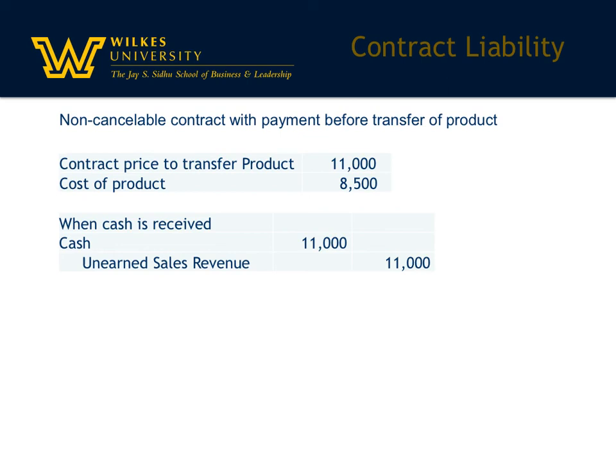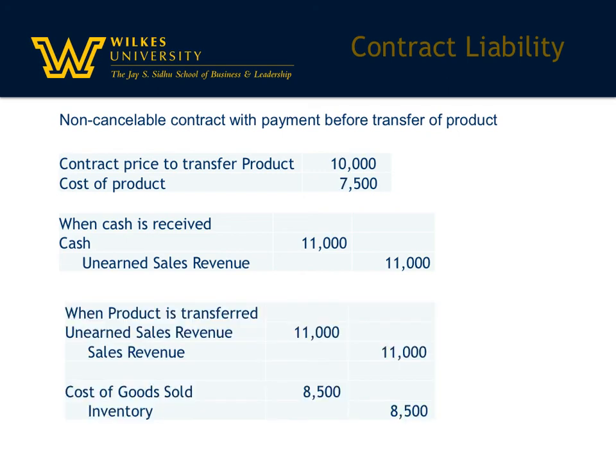Similar to what you did in financial accounting, when the obligation is fulfilled, you eliminate the liability and record the earning of the revenue. When the product is transferred, unearned sales revenue is debited and sales revenue is recorded. And since it's a transfer of a product, we debit cost of goods sold and credit inventory for the cost of that product. Those are the entries for contract assets and contract liabilities.